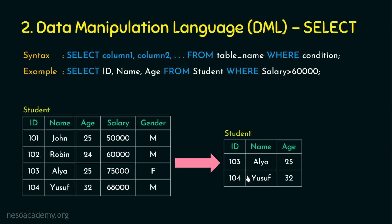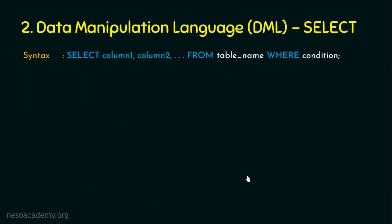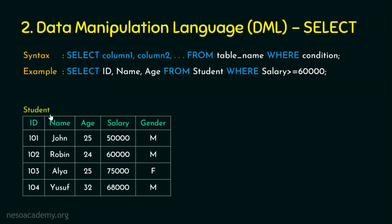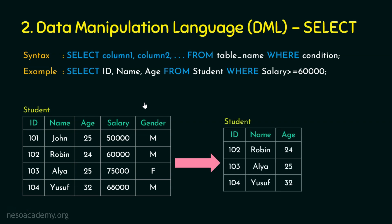In case we want to check our balance, a select query should be sent. For example: SELECT id, name, age FROM student WHERE salary >= 60000. The condition is salary greater than or equal to 60000. From a four-row table, we get three rows because 50000 is not >= 60000, but 60000, 75000 and 68000 all are, so we retrieve three rows with columns id, name and age.